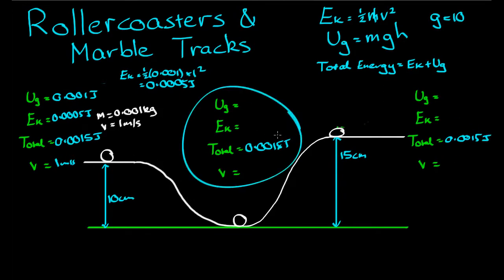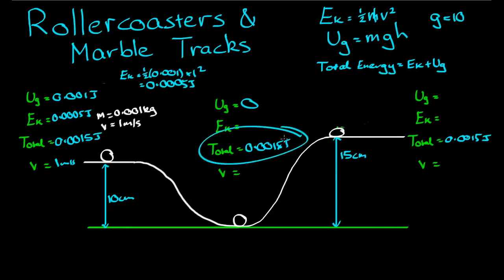We can move on to the next set of unknowns here. Since the marble is at its lowest point here, and is actually resting level with the ground, height is zero, and therefore gravitational potential energy is equal to zero. Since the total energy has to be made up of the sum of these two energies, and gravitational potential is providing nothing at all, the kinetic energy has to be equal to that total energy, so 0.0015 joules.